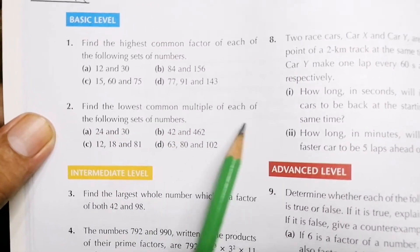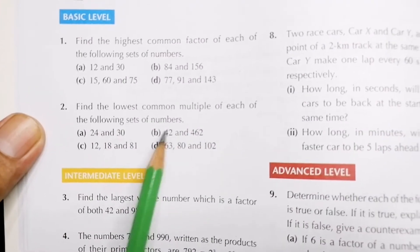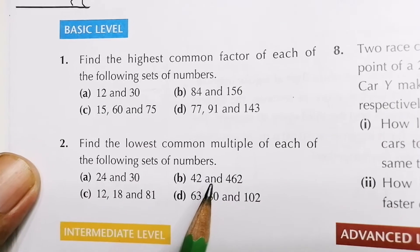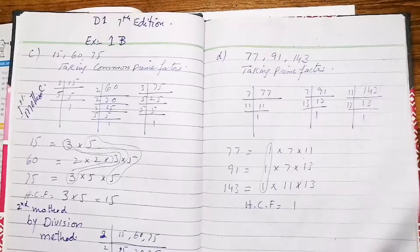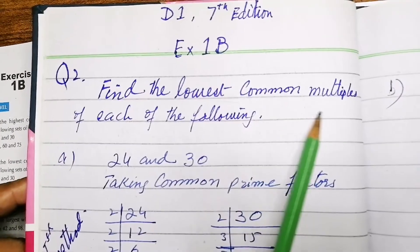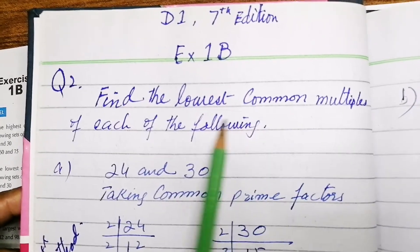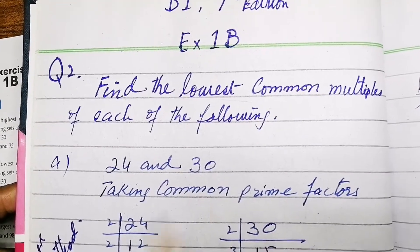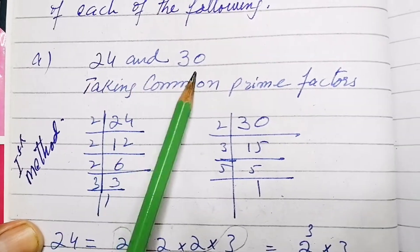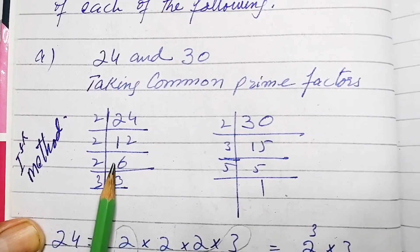Question number 2: find the lowest common multiple (LCM) of each of the following numbers. We have to find the LCM, also called the least common multiple. For part A, 24 and 30 are given, so we take their prime factors separately.